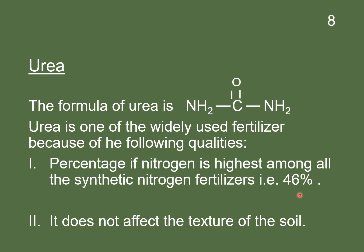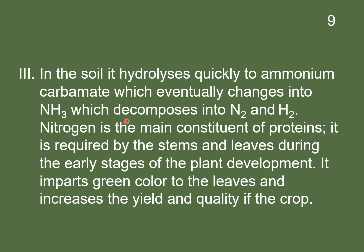Number two, urea does not affect the texture of the soil. Number three, in the soil it hydrolyzes quickly to ammonium carbamate, which eventually changes into ammonia, and this ammonia decomposes into nitrogen and hydrogen. Nitrogen is the main constituent of protein. It is required by stems and leaves during early stages of plant development, imparts green color to the leaves, and increases the yield and quality of the crop.